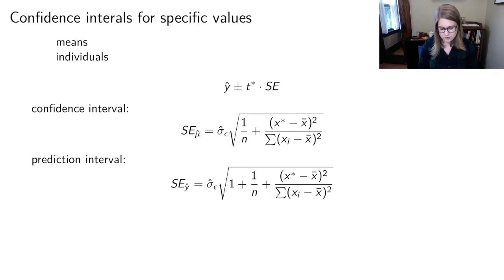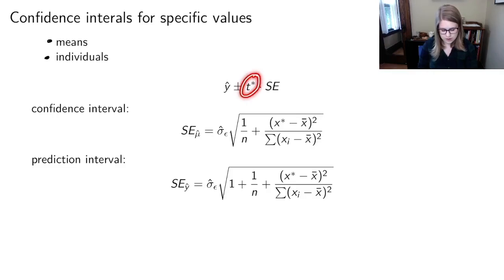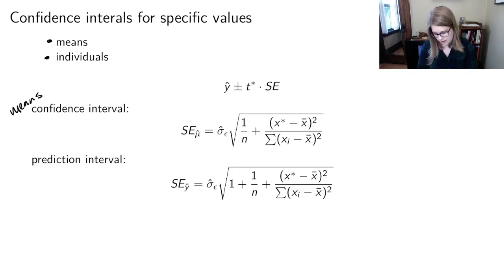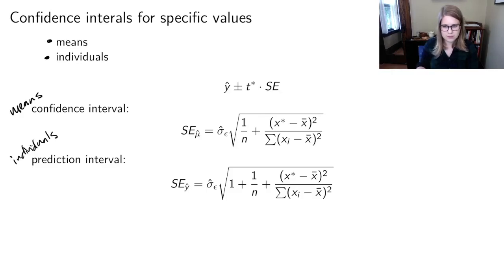We also have confidence intervals for specific values, broken down into confidence intervals for means at a specific value, or for individuals at a specific value. We do these using a y_hat predicted value, a T* value depending on the t-distribution, and a standard error. The thing for means we call a confidence interval, and the thing for individuals we call a prediction interval. I think these names are pretty terrible — we call many things confidence intervals in statistics. But here, a confidence interval means it's for a specific value but thinking about a mean of that specific value.